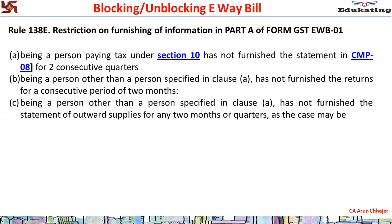One important point: if there is no tax liability, nil CMP-08 still has to be furnished. The second category covers regular registered persons - those not under composition - who have not furnished their return under Section 39, that is GSTR-3B, for two consecutive months.